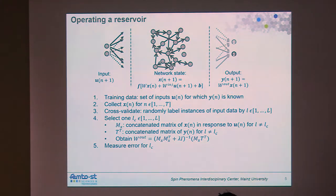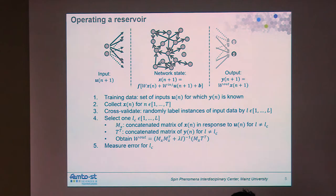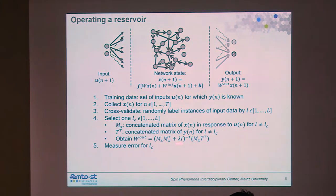Lambda is a regularization factor to avoid overfitting the matrix, typically small — around 10^-4 to 10^-3. For any experimental hardware implementation with noise, you can mostly ignore it. Lambda is important when creating a model on a computer; if set to zero, overfitting occurs. With an experimental system, you don't really need to worry about it.